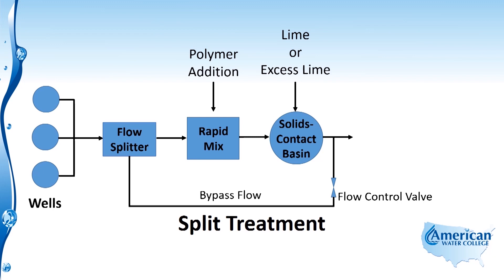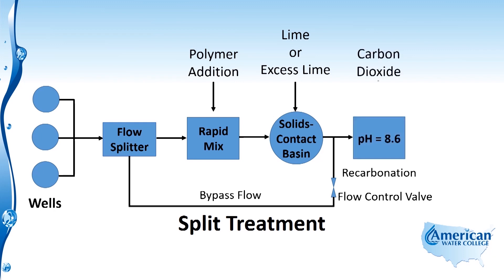Both flow streams then meet up and go into the recarbonation process where carbon dioxide is added and the pH is adjusted to 8.6. From there the water flows through filters, then to disinfection, and into the distribution system. The split treatment method is primarily a way to reduce chemical costs by treating only a portion of the total flow.